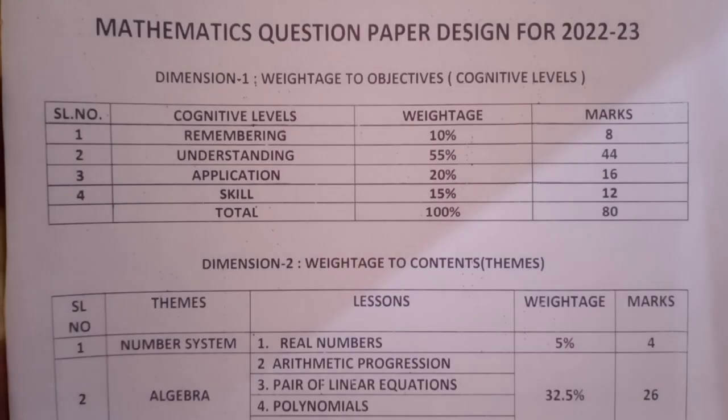Three dimensions are involved in preparing a question paper. Dimension one: weight to objectives. Dimension two: weight to contents. Dimension three: weight to types of questions. You are already familiar with types of questions, so you have to understand dimension one and two.